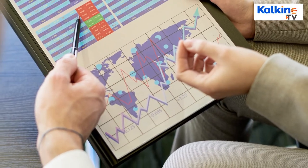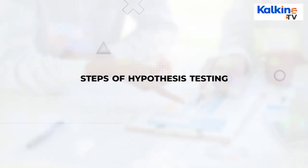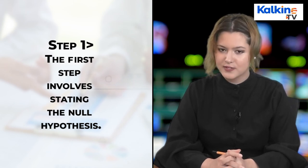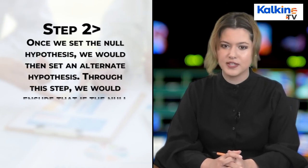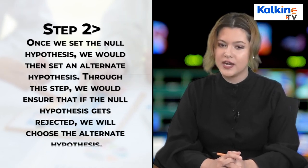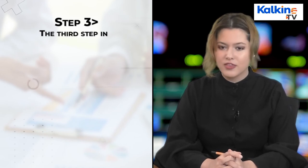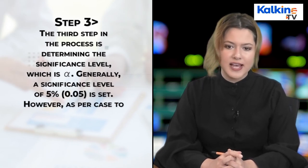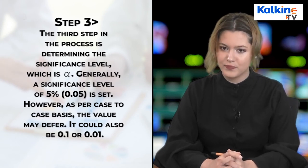Once the analyst is familiar with the above terms, he or she is ready to test the theory. Here are the steps to follow while doing hypothesis testing. Step one: state the null hypothesis. Step two: set an alternative hypothesis, ensuring that if the null hypothesis is rejected, we will choose the alternate hypothesis. Step three: determine the significance level. Generally a significance level of five percent (0.05) is set, however it may also be 0.1 or 0.01 depending on the case.